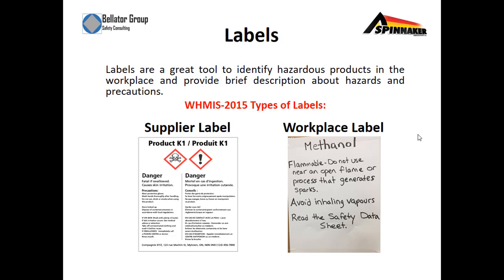Labels. Labels are a great tool to identify hazardous products in the workplace and provide a brief description about hazards and their precautions. This is a supplier label based on the WHMIS 2015 system, and next to it is a workplace label that you would make on-site. There are differences and similarities between these two — both must have the name of the product, a general description, and also reference the SDS sheet. The supplier label will provide more information than your workplace label.